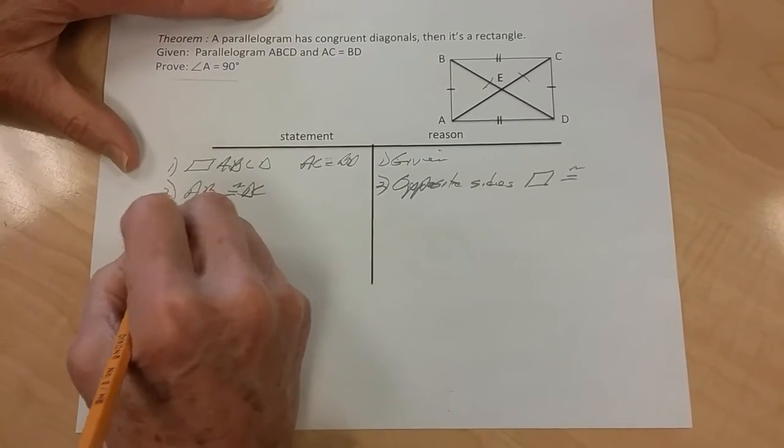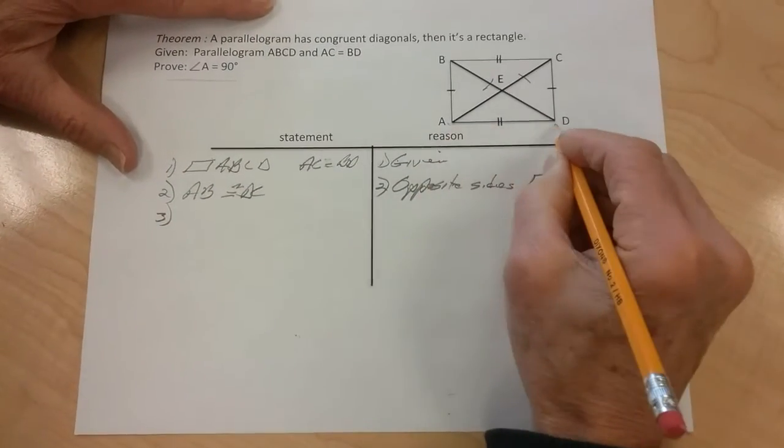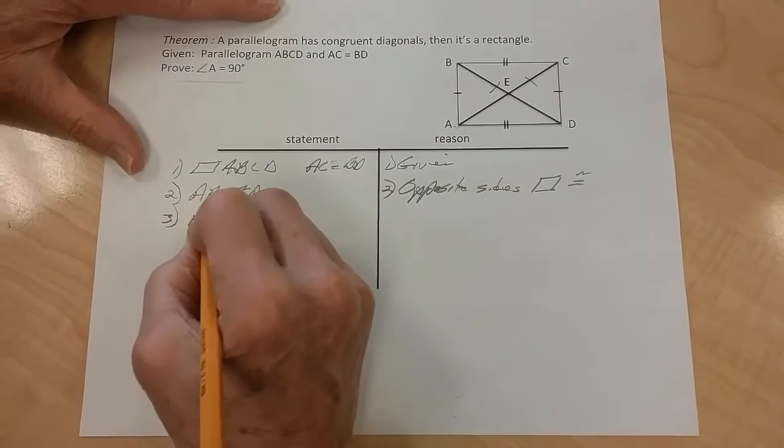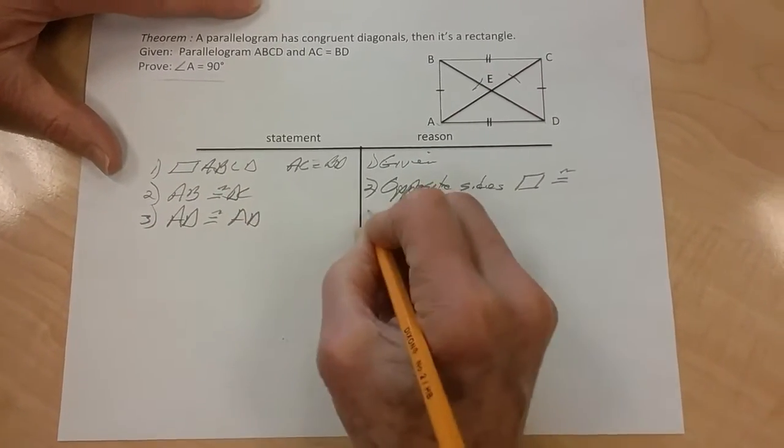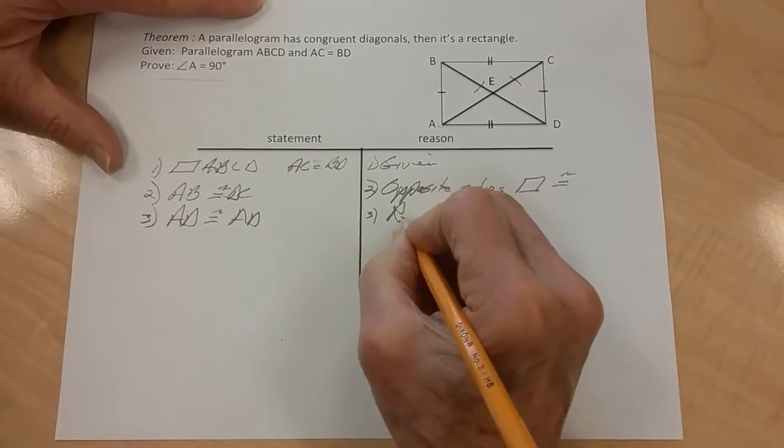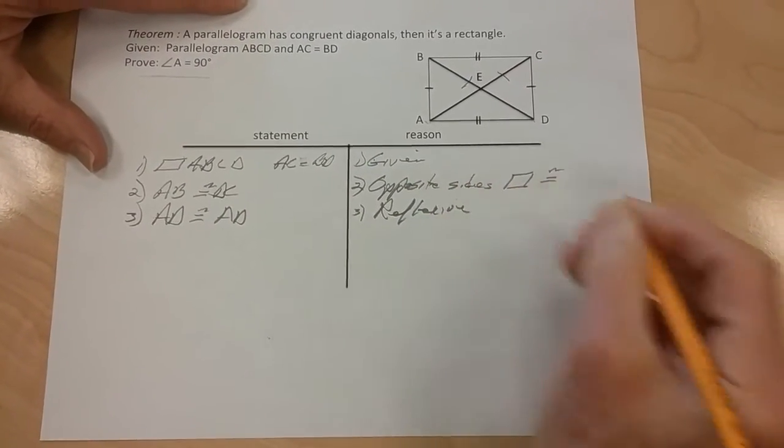Three, I know that AD is equal to AD. So that's by reflexive property: AD congruent to AD, three, reflexive.